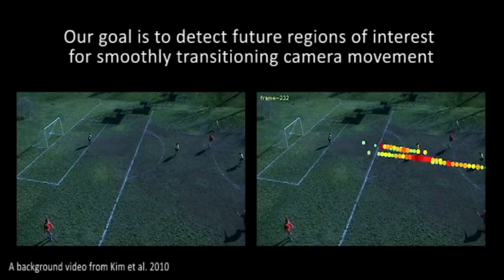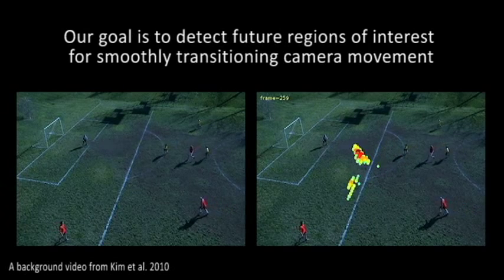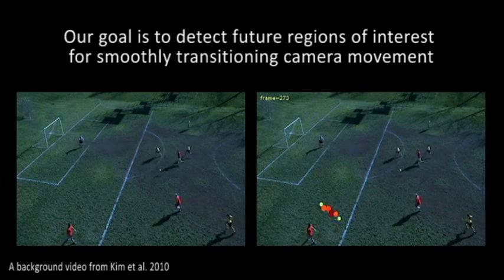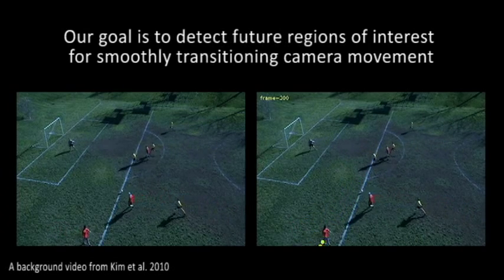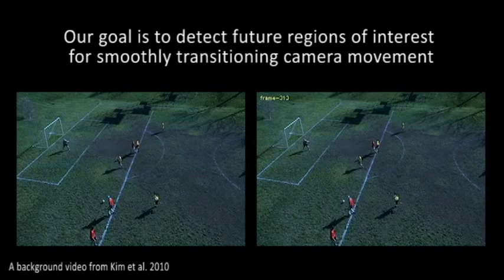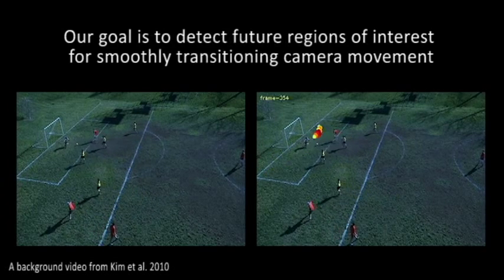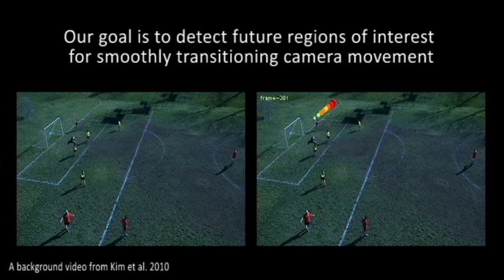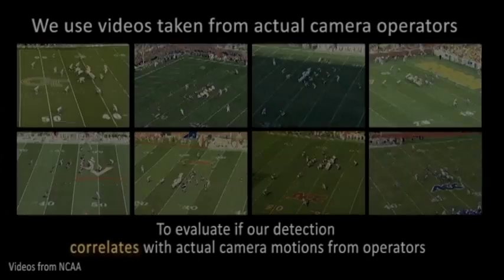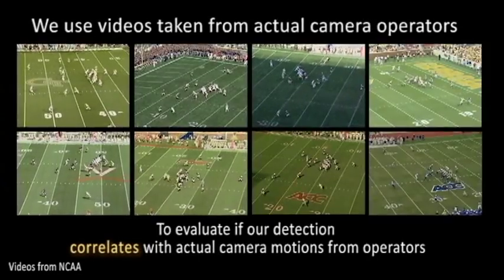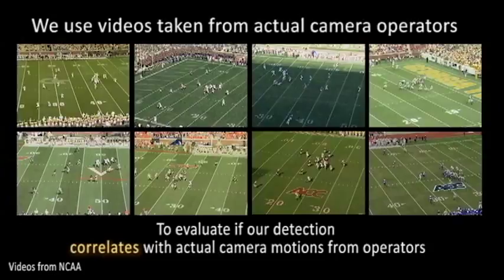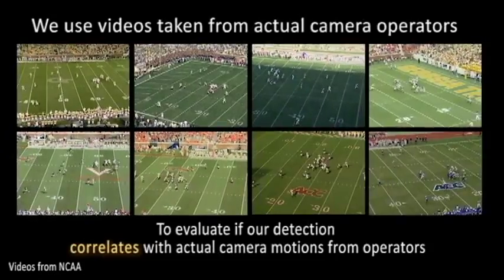Our goal in this paper is to predict future regions of interest in a dynamic scene. Our interest is in predicting such locations for moving cameras so that active camera systems can be built to support capturing of such dynamic scenes. We briefly overview our approach and evaluation, using football videos to see if our predictions correlate with the camera motion created by professional operators.